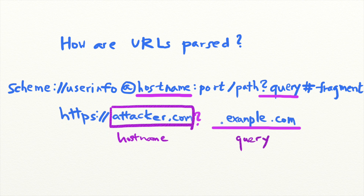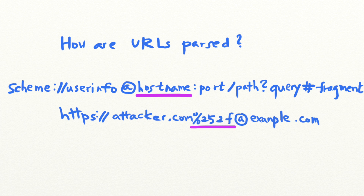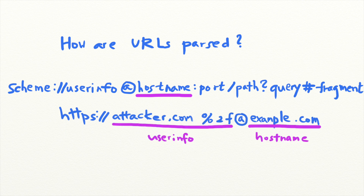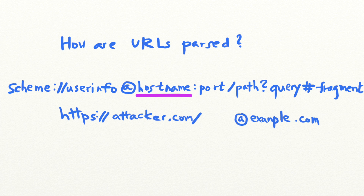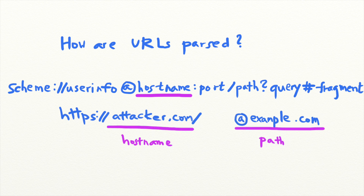Still, many issues arise when the validator and the browser decode the URL a different number of times. Take this URL for example — this is the double-encoded version of the slash character. If the validator does not double decode this URL, the URL will be interpreted such that example.com is the hostname and attacker.com is the URL path. On the other hand, if the browser does double decode the URL, example.com becomes the path portion of the URL and the browser will navigate to attacker.com.